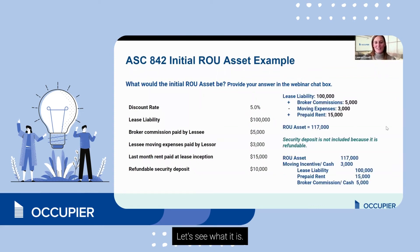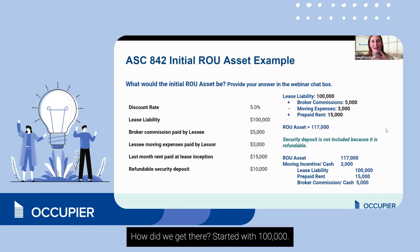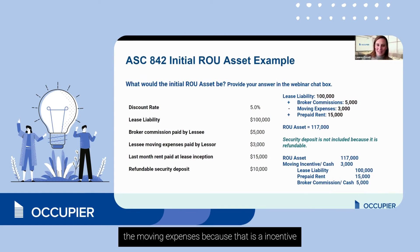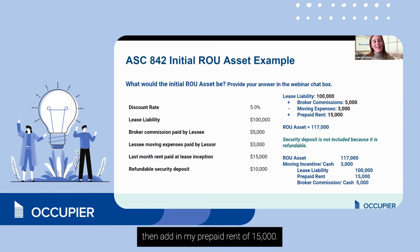The answer is $117,000. Starting with $100,000, add the broker commission of $5,000 as an initial direct cost, subtract moving expenses because that is an incentive, and then add prepaid rent of $15,000.